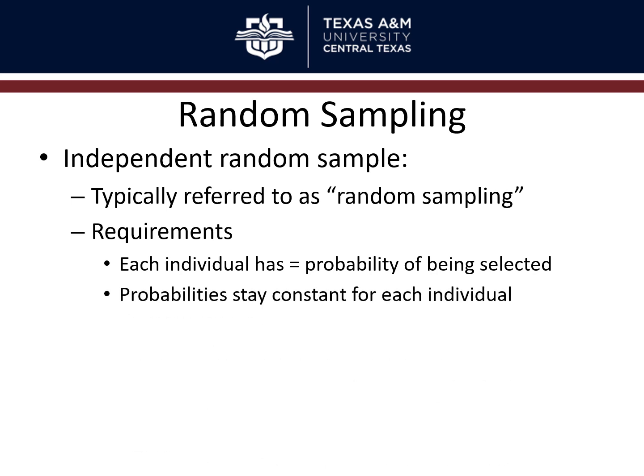The probabilities must also stay constant for each individual. After one person has been selected, everybody else still has the same chance. This means you must theoretically use sampling with replacement. If you draw a phone number out of a hat containing a million numbers, that person is in your study. If you set it aside and don't put it back, the remaining people now have a one in 999,999 chance — better odds because it's a smaller pool. So you have to put that number back and draw again for it to be truly independent random sampling.